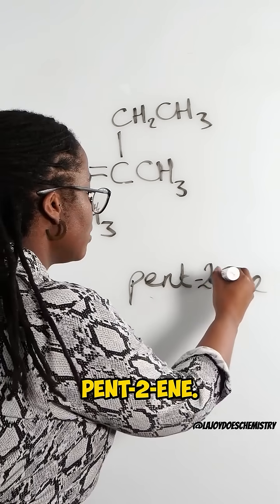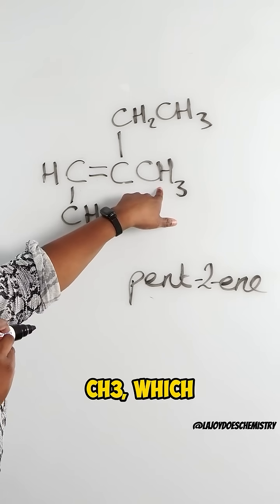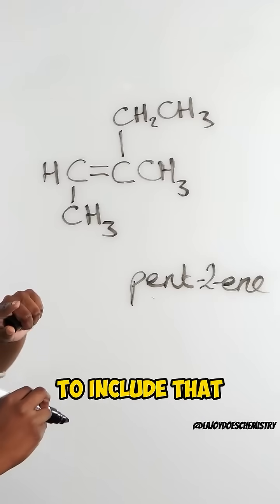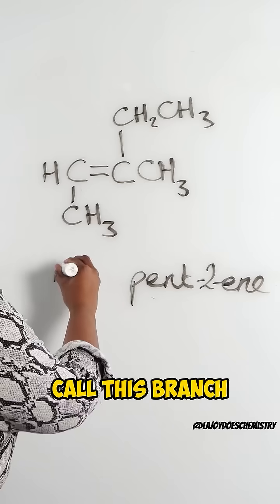So the two wins. Pent two ene. We have this CH3 which is a branch so we have to include that as well. As there's only one carbon on this branch we call this branch methyl.